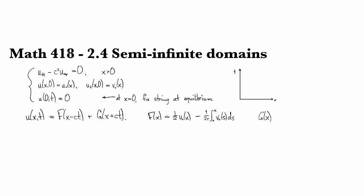Our leftward-moving signal is going to come half from the displacement and half from the initial velocity. It's important to note that since we're doing this on the semi-infinite domain, these arbitrary functions F and G are determined by the initial conditions only for x positive.